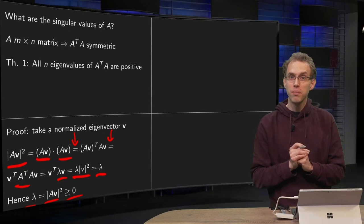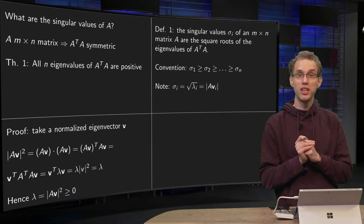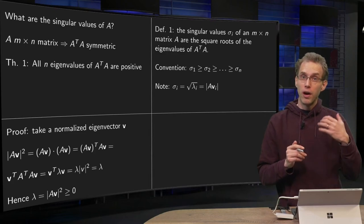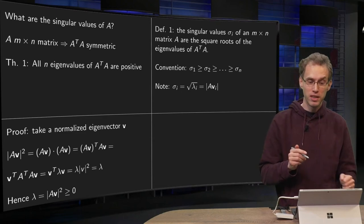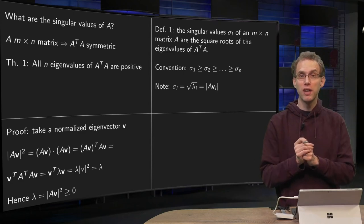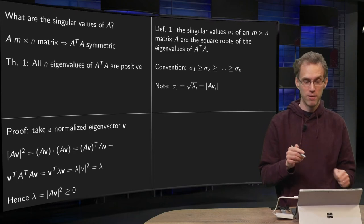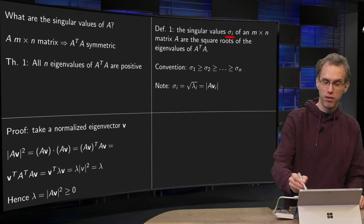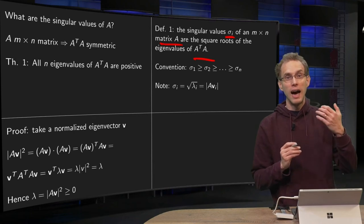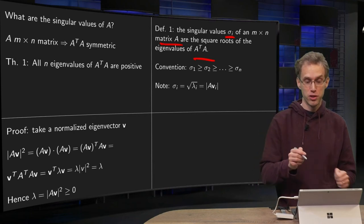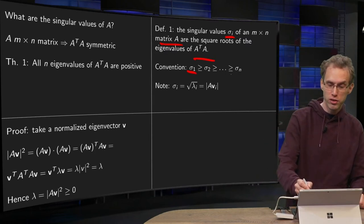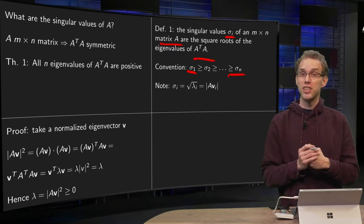Now that we have proven this small theorem, we are ready to see what singular values of a matrix A are. First compute A transpose times A — that matrix will have N real eigenvalues. If you take the square root of those eigenvalues, you get the singular values of A. So singular values sigma_i of a matrix A are the square roots of the eigenvalues of A transpose times A. By convention, we put the largest one first, ordering sigma_1 ≥ sigma_2 ≥ ... down to the smallest, which is still at least zero.